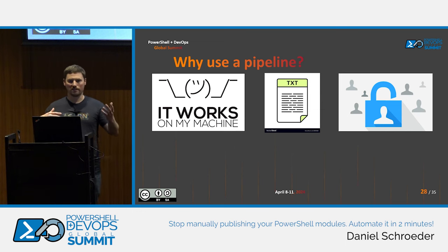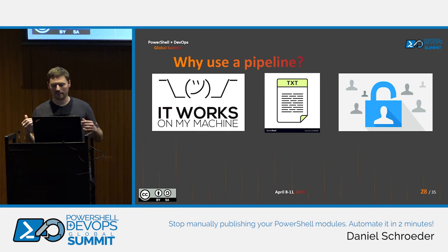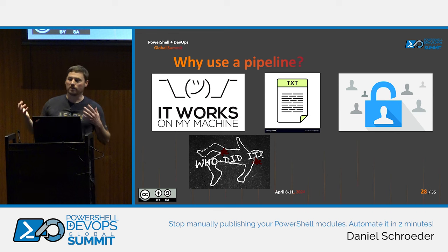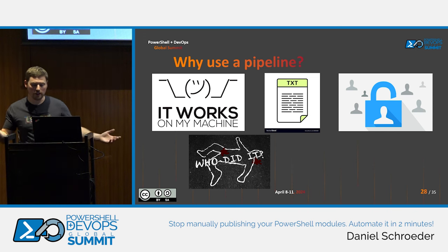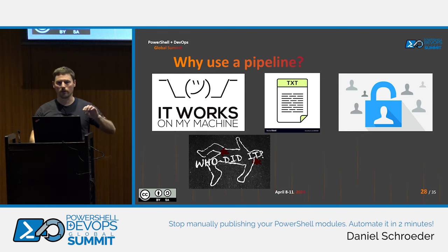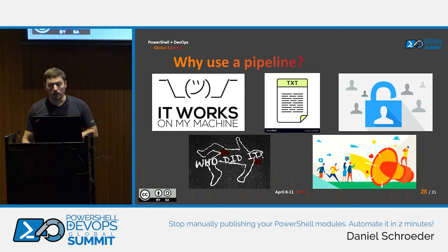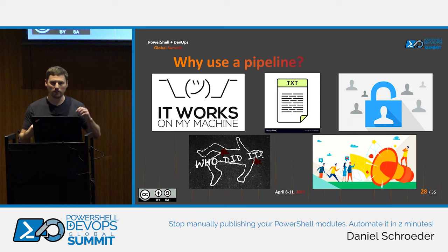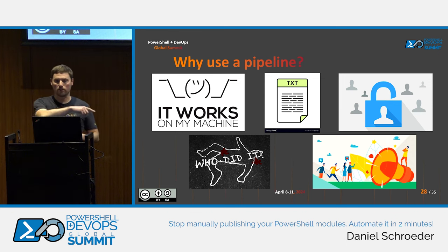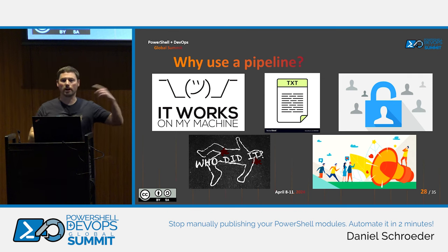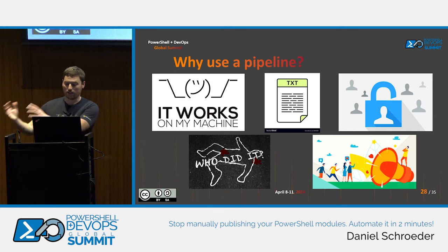Security: that API key nobody on the team needs access to anymore — only the pipeline has it. You get auditing: you can tell exactly who kicked off the workflow, as opposed to a local script where it could be anyone. And finally, notifications: many CI/CD systems like Azure DevOps allow people to subscribe to notifications themselves, so instead of hard-coding Slack messages into your pipeline, team members can self-serve on those subscriptions.